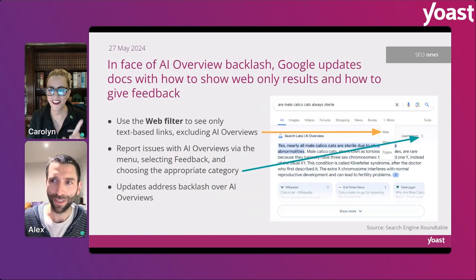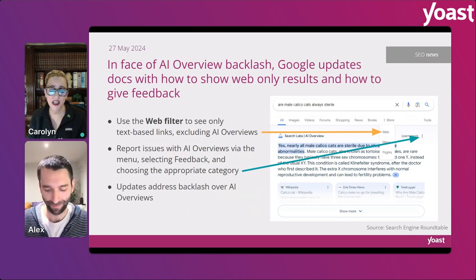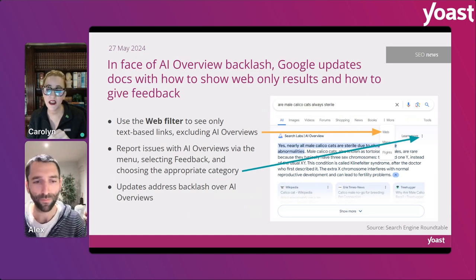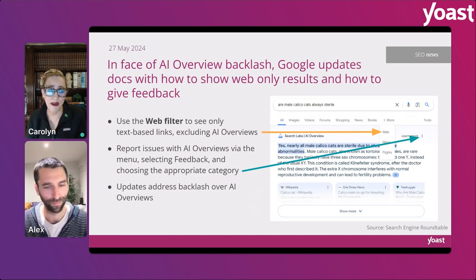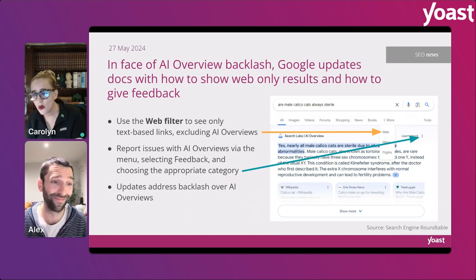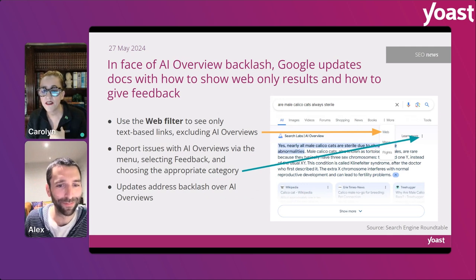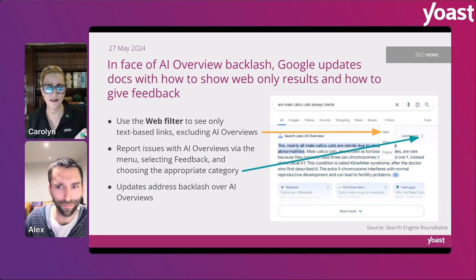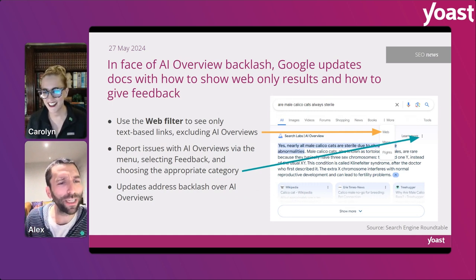There's a lot happening in AI. On the 27th, because of the backlash, Google updated their documentation on how you can show web-only results if you don't want to see AI Overviews. If you go to the 'More' option, you can select 'Web' and it will show you just the regular web results. If you have problems with AI Overviews — like it advised you to do something dangerous — you can click 'Learn More' and give appropriate feedback, which they may or may not take into consideration.